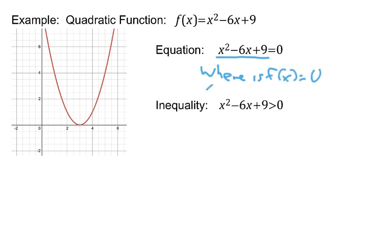In other words, where are the x-intercepts? Notice that this parabola only has one x-intercept right there at 3. So the solution of the equation would just be x equals 3, or if I write it as a solution set, the set containing 3, which might be a little better.